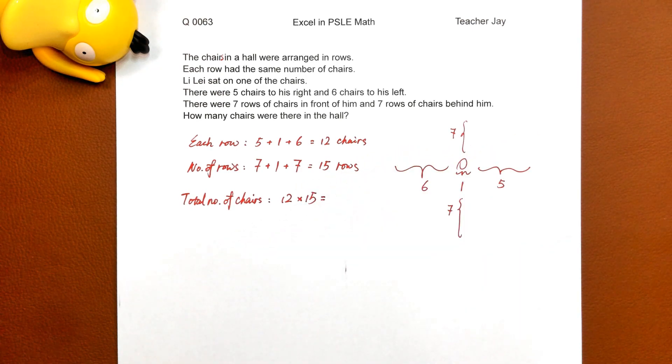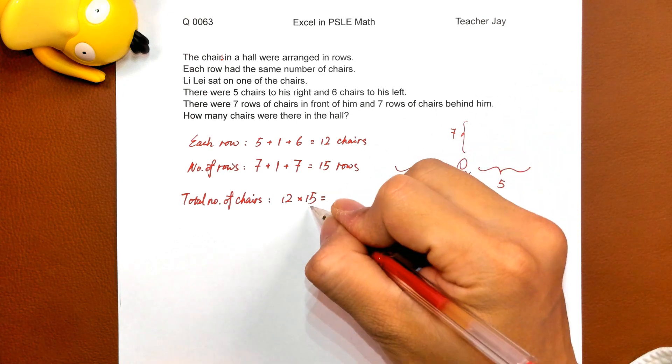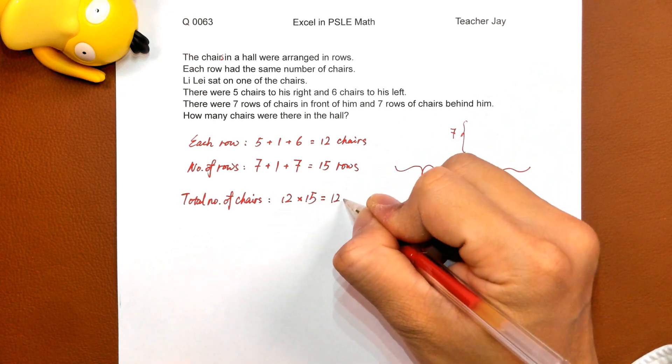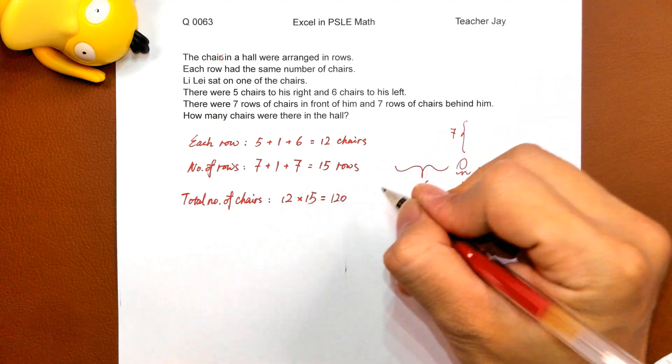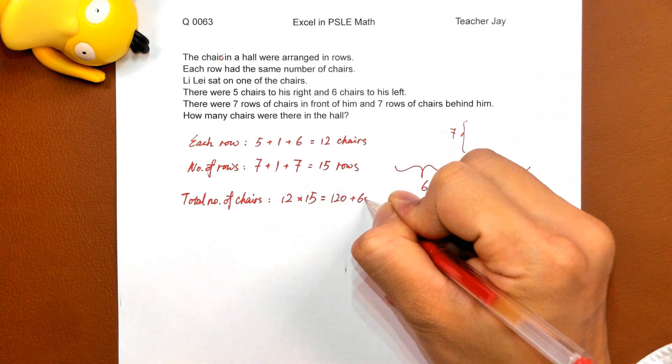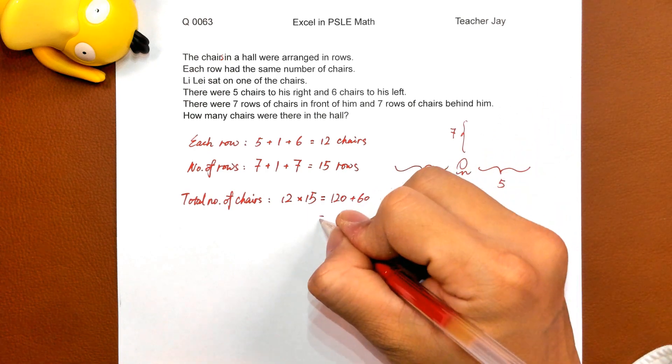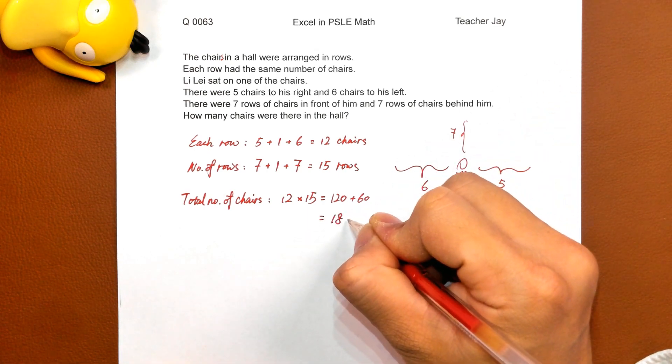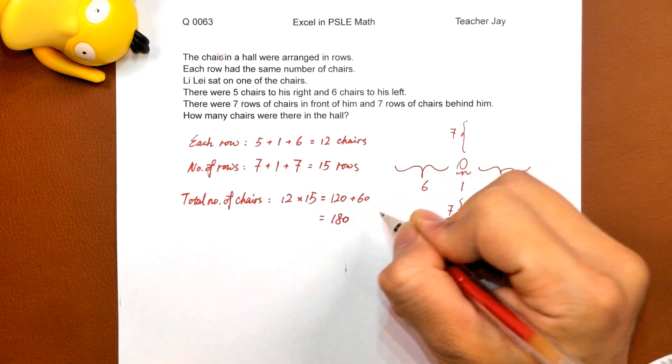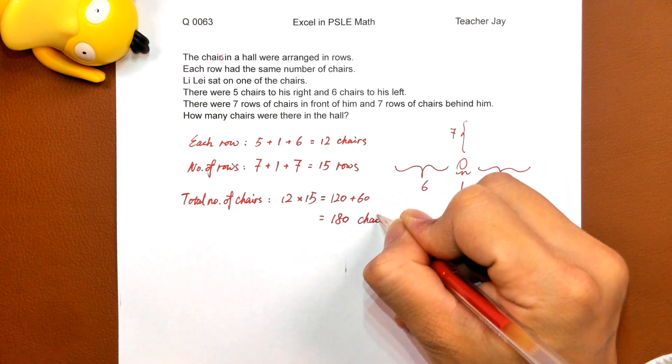We can calculate without a calculator. Ten times twelve is one hundred and twenty, and five times twelve is sixty. Total number of chairs in the hall: one hundred and eighty chairs.